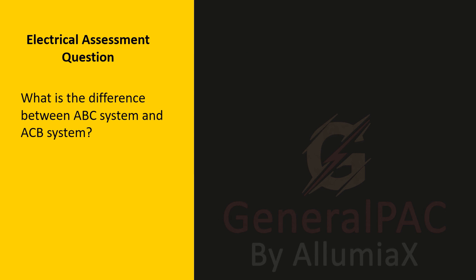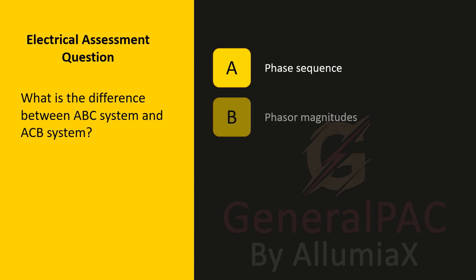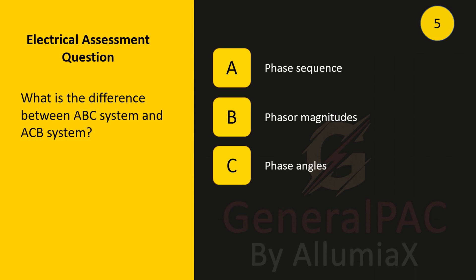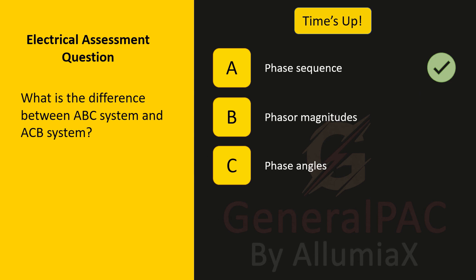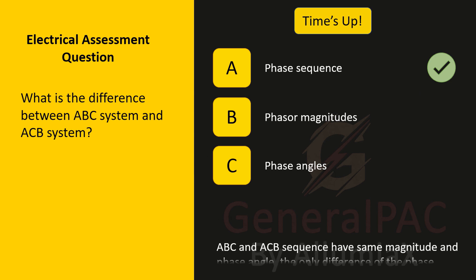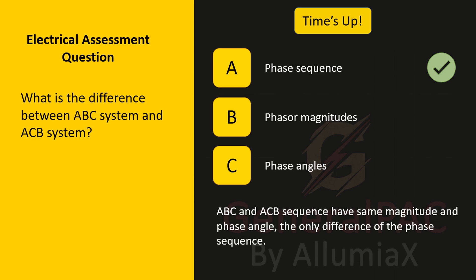What is the difference between the ABC system and the ACB system? Is it a difference in phase sequence, different phasor magnitudes, or different phase angles? It's the phase sequence. ABC and ACB sequences have the same magnitude and phase angle. The only difference is the phase sequence — one is ABC versus ACB.